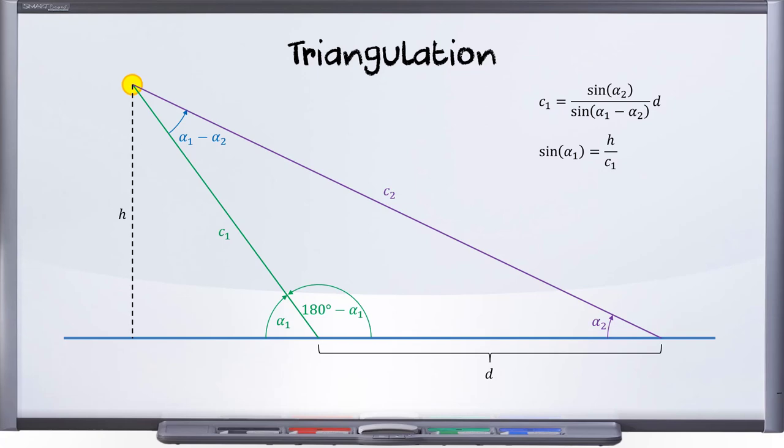Okay, the unknown now, this is now known, this is now known, the h is the unknown. So let's solve this for h, and there you go, h equals c1 times the sine of alpha one. Let's insert what we know c1 to be, and there we go.